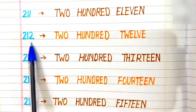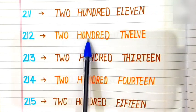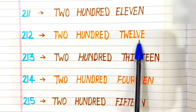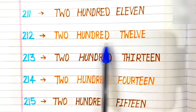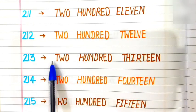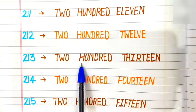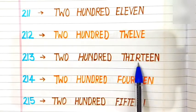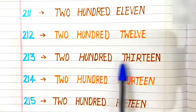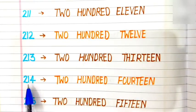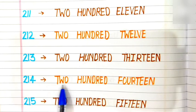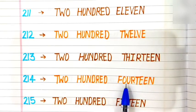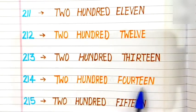212: T-W-O H-U-N-D-R-E-D T-W-E-L-V-E. 212. 213: T-W-O H-U-N-D-R-E-D T-H-I-R-T-E-E-N. 213. 214: T-W-O H-U-N-D-R-E-D F-O-U-R-T-E-E-N. 214.